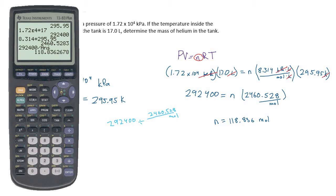You know that dividing is the same as multiplying by the reciprocal. So this is the same as 292,400 times, and then we put moles on the top and 2460.528 on the bottom.